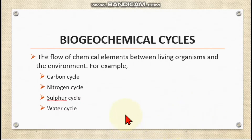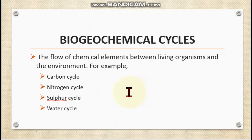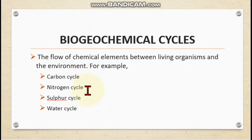We will start by studying biogeochemical cycles. The flow of chemical elements between living organisms and the environment is known as biogeochemical cycles. There are many different types, including the carbon cycle, nitrogen cycle, sulfur cycle, and water cycle. Carbon and nitrogen cycle are in our syllabus.